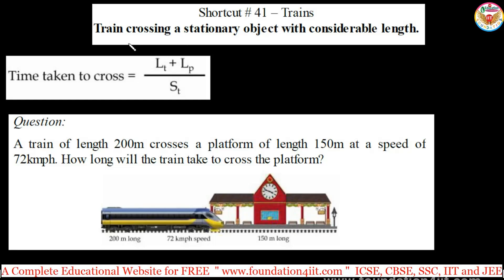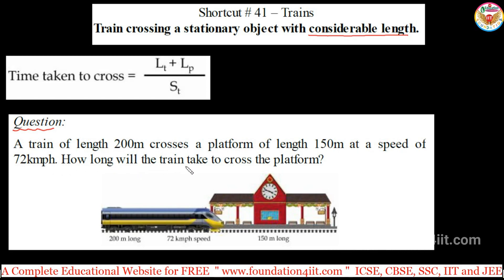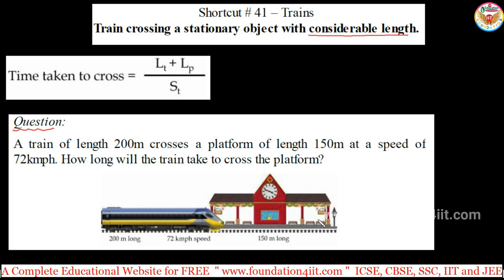In shortcut tricks for train problems: train crossing a stationary object with considerable length. In this question, a train of length 200 meters crosses a platform of length 150 meters at a speed of 72 kilometers per hour. How long will it take? To cross this platform, the complete length of the train should move along with the platform length also considered, since the platform has a given length.